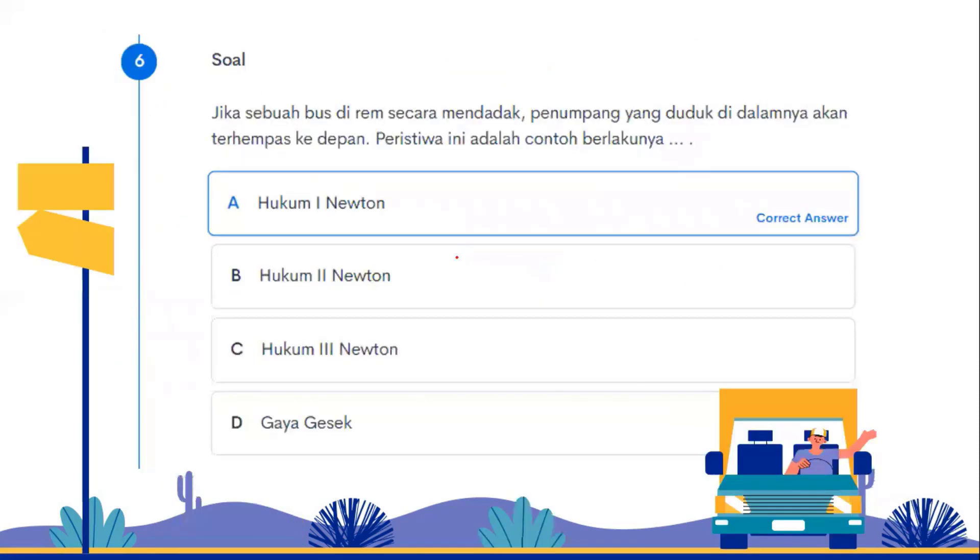Number 6: If a bus is braked suddenly, passengers sitting inside will be thrown forward. This event is an example of what? Newton's first law. For example, this person should wear a seatbelt. That's also an example of Newton's first law.